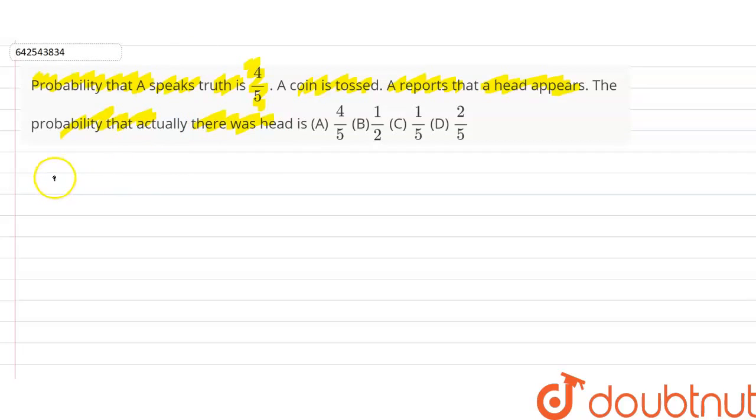So probability of speaking a truth, TR, is 4 upon 5 as given in question. So probability that person A speaks false is 1 minus 4 upon 5, that is 1 upon 5.